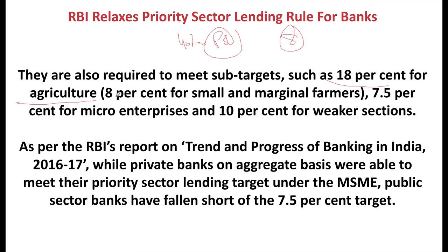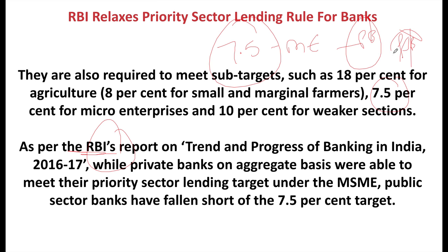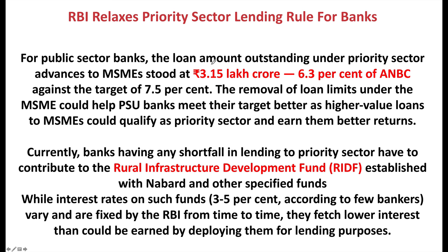There are sub-category targets within priority sector lending: 18% for agriculture, of which 8% must go to small and marginal farmers; 7.5% for micro enterprises; and 10% for the weaker sections of society. A Reserve Bank of India report — 'Trend and Progress of Banking in India 2016-17' — showed that for public sector banks, the loan amount outstanding under priority sector advances to the MSME sector stood at 3.15 lakh crore, which is 6.3% of Adjusted Net Bank Credit — against the target of 7.5%, falling short by 1.2 percentage points.